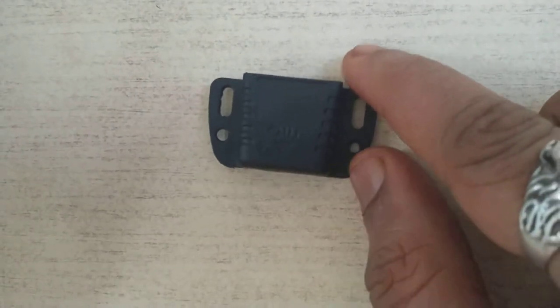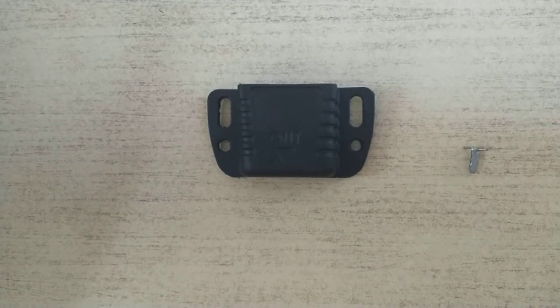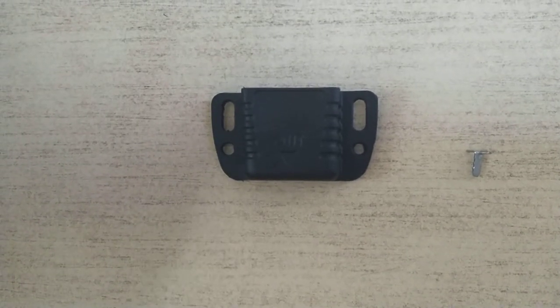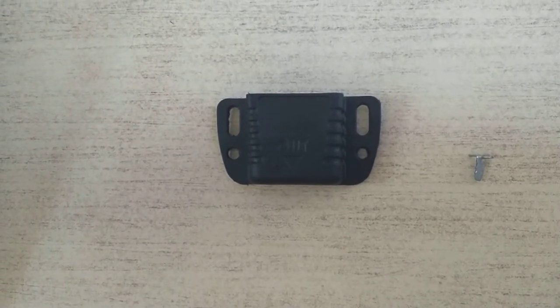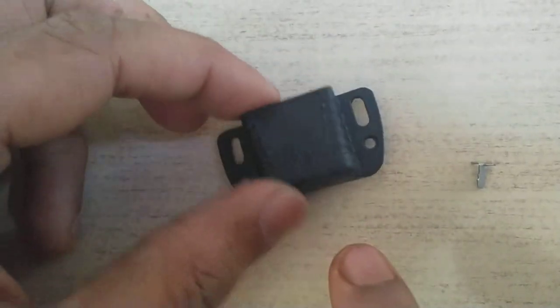This is an RFID tag which will be installed on the jerry cans or diesel cans. This is in a square form factor and comes with tamper proof protection along with it.